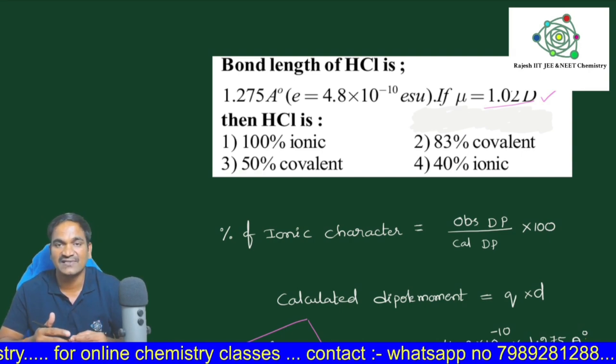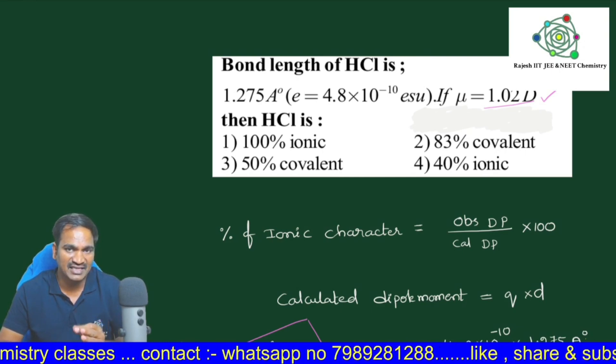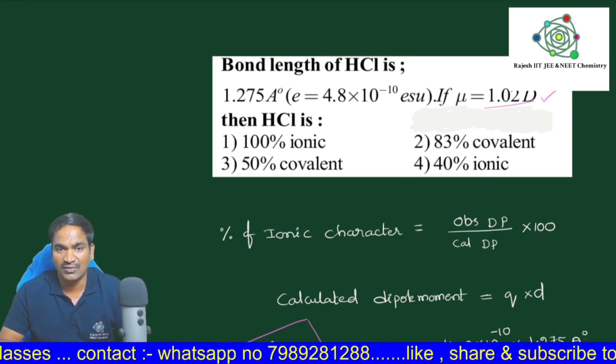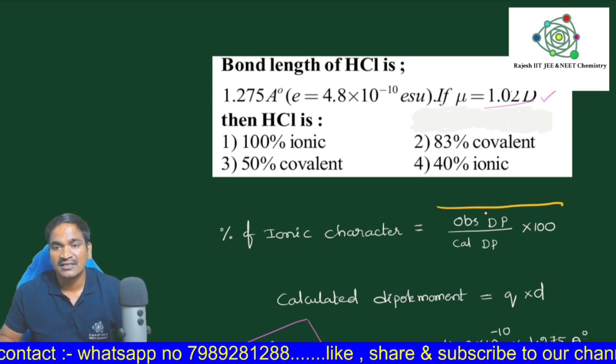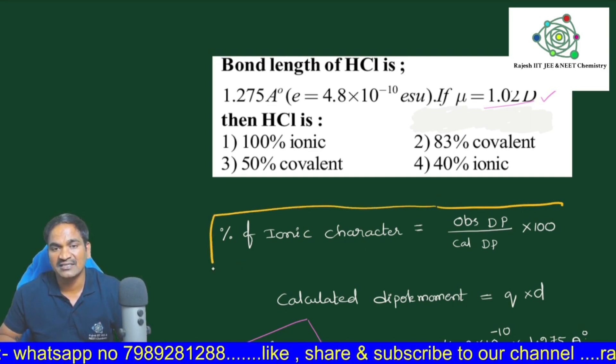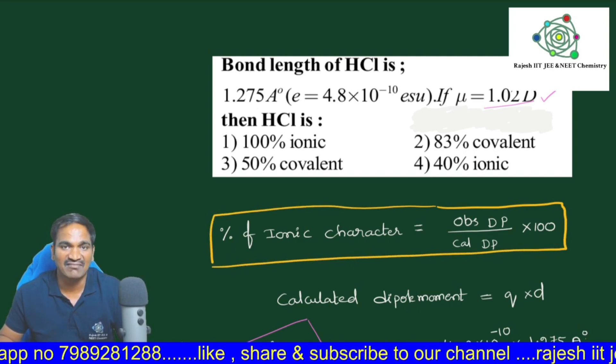First, ionic character percentage formula: percentage of ionic character is equal to observed dipole moment divided by calculated dipole moment into hundred. This formula you need to have clarity on.